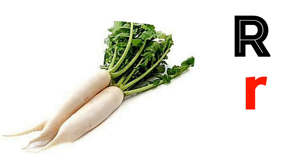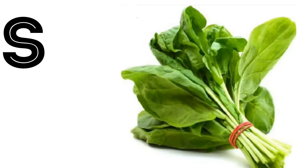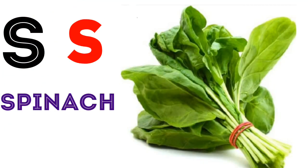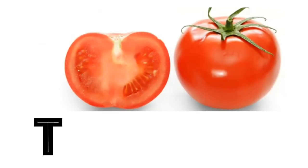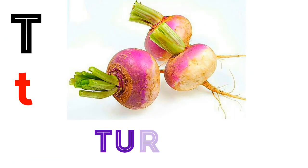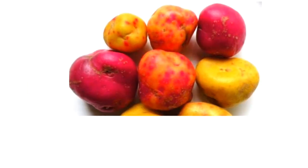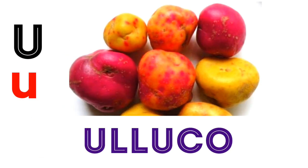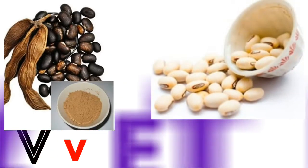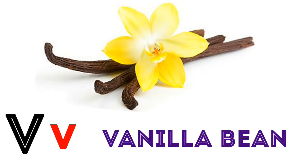R. R for radish. S. S for spinach. T. T for tomato. T for turnip. U. U for oluko. V. V for velvet bean.